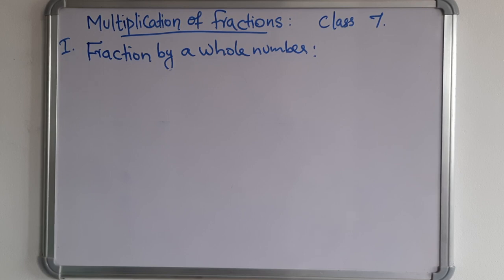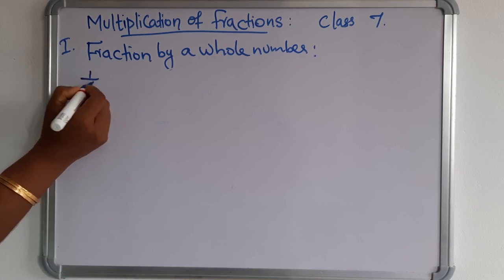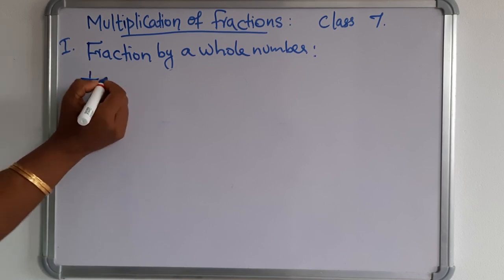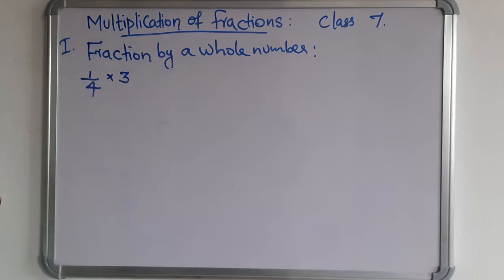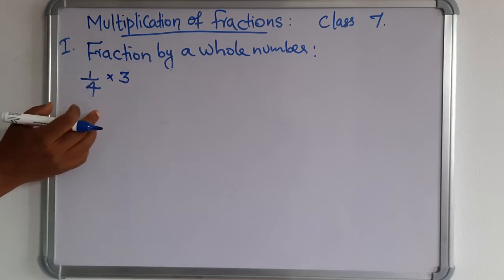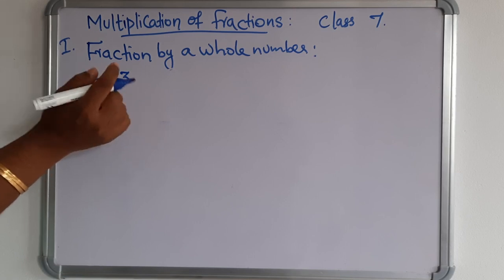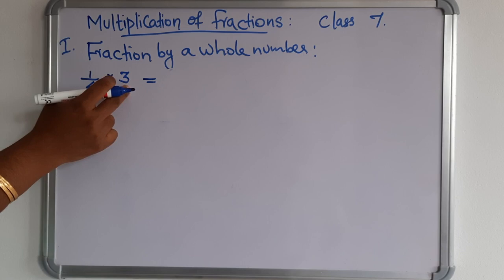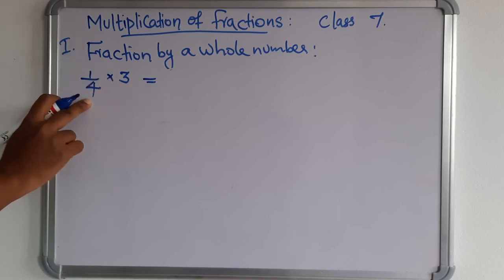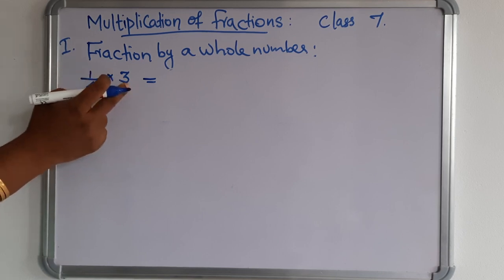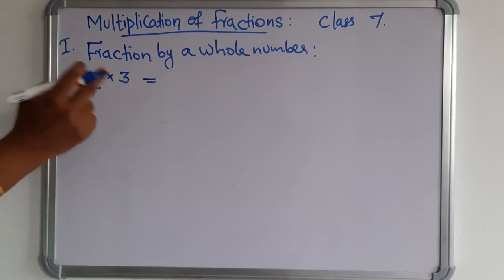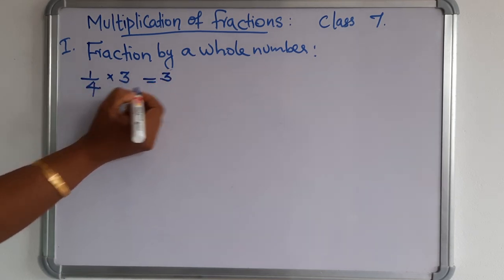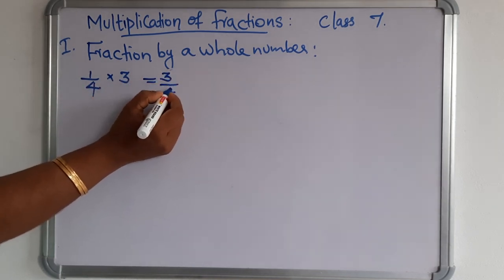How to multiply a fraction by a whole number? As you know, 1/4 is a fraction and 3 is a whole number. The rule is that you want to multiply the numerator and the whole number, keeping the denominator the same. There is no change in the denominator. Multiply the numerator with the whole number: 1 × 3 = 3, and the denominator is 4 itself.